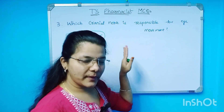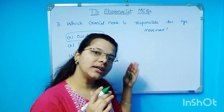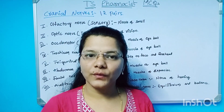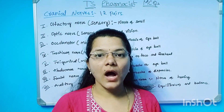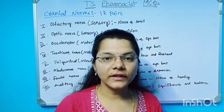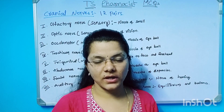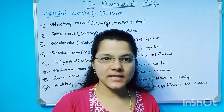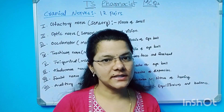The 12 pairs of cranial nerves are of three types of nerve: sensory nerve, motor nerve, and mixed nerve.